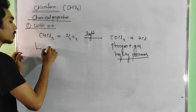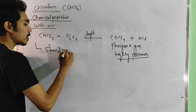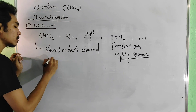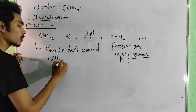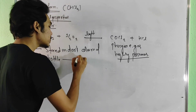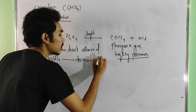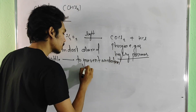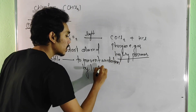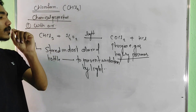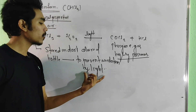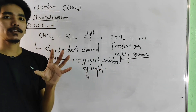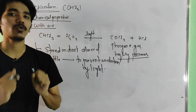Chloroform is stored in a dark colored bottle. This is done to prevent oxidation by light or air. Oxidation occurs in the presence of light or air, so storing in a dark colored bottle prevents this reaction.